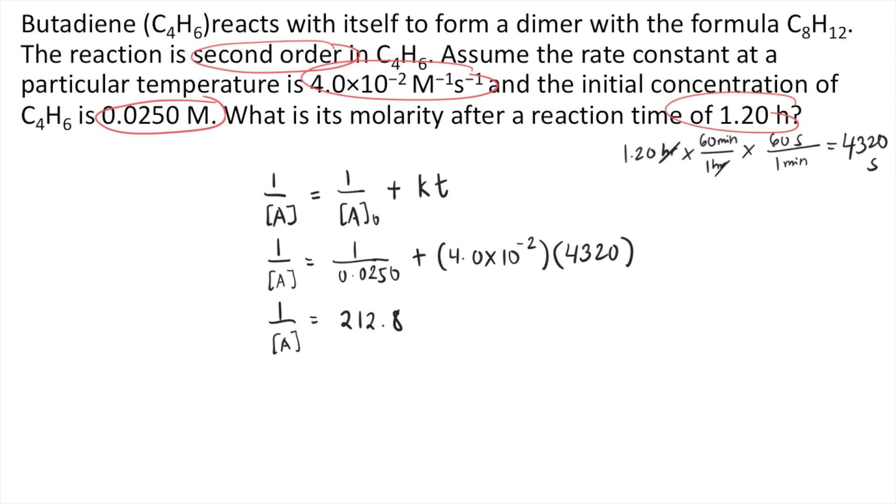So if you want to solve for A, what you just need to do is get the reciprocal of the other side. So 1 over 212.8, and you will get approximately 0.00470.